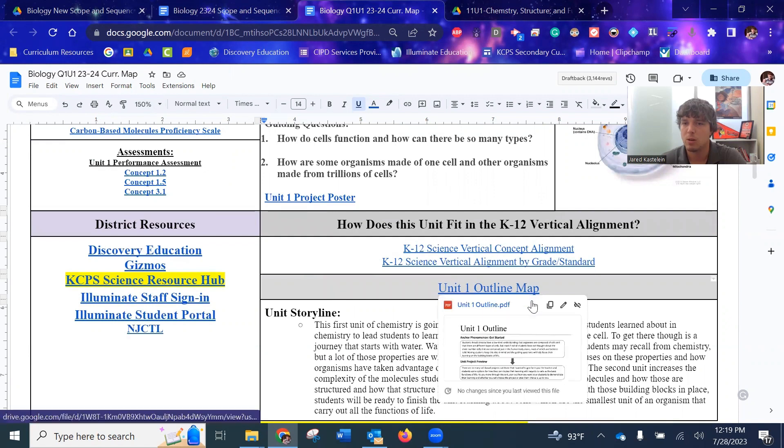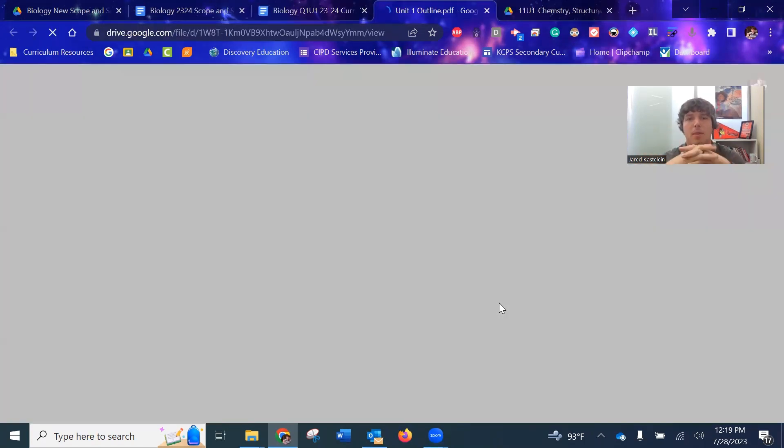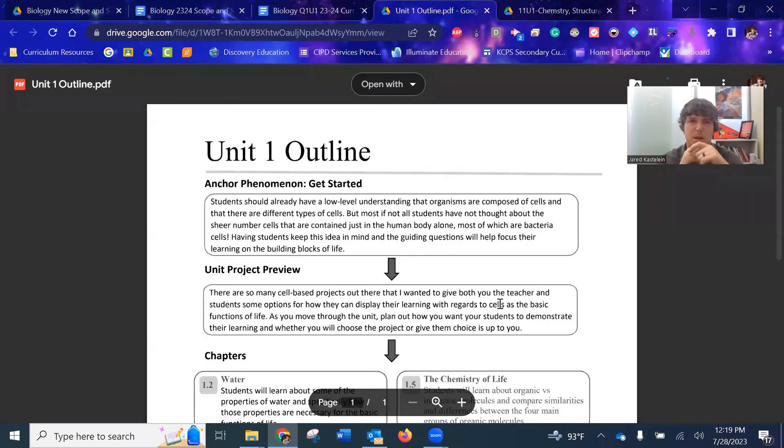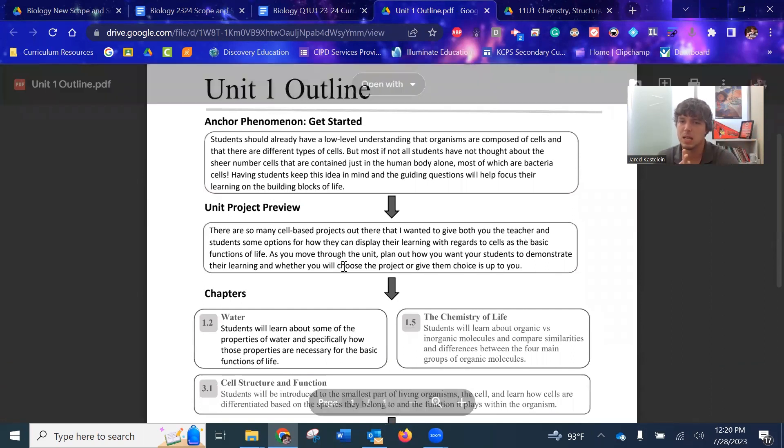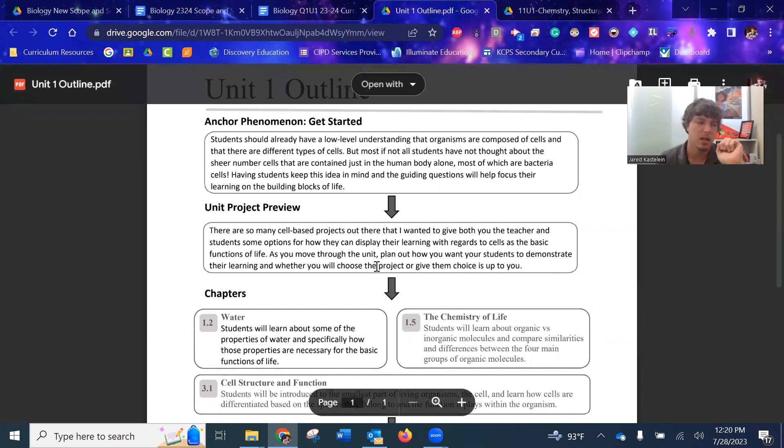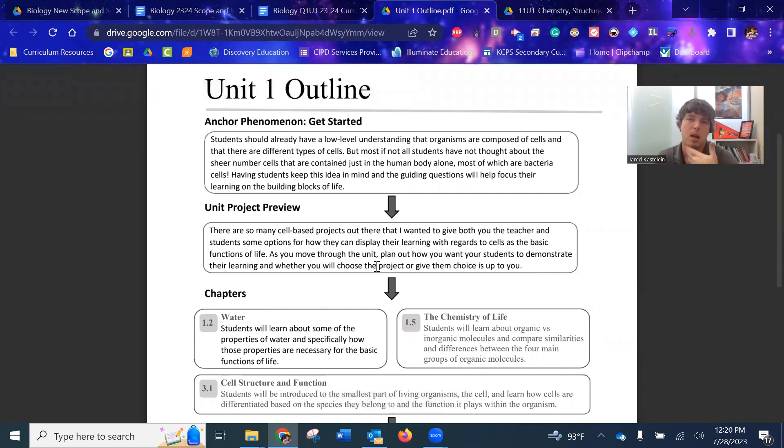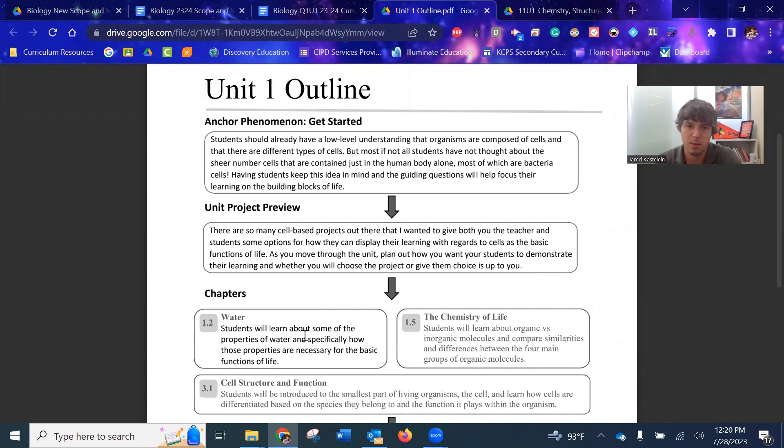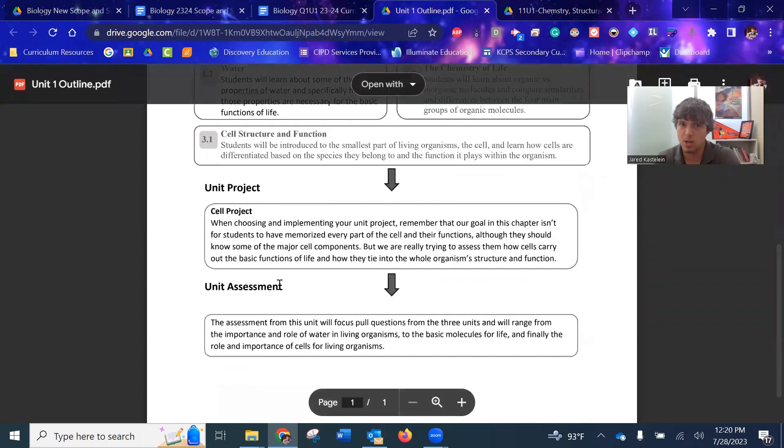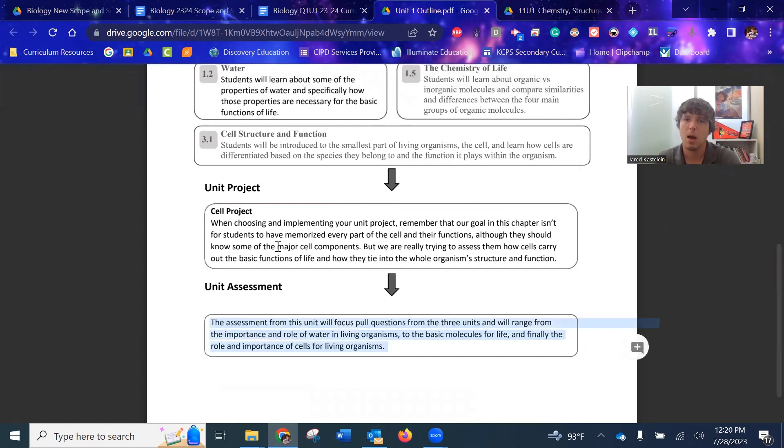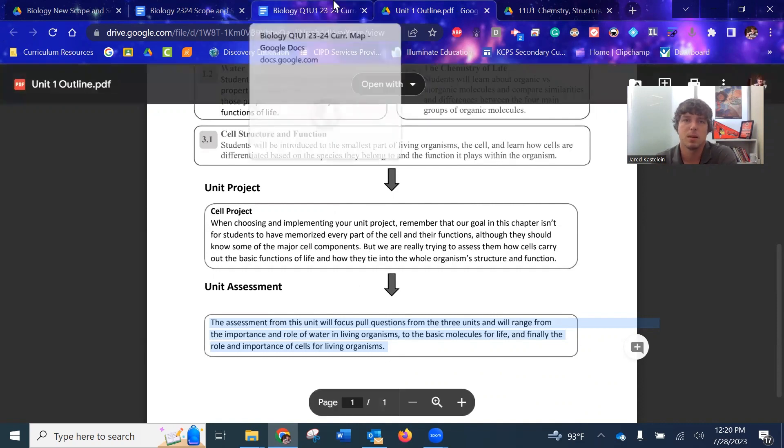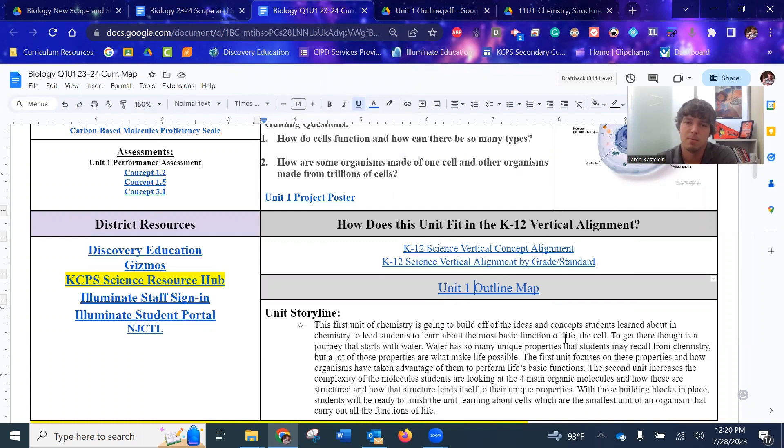Similar to that project poster, I have a unit outline map. This is kind of like a teacher facing version that just helps. Here's my flow as I move throughout the unit. You start with your phenomenon. You may want to preview what the project is with your students so they keep in mind what they're working towards. So that way, when you get to the end, they're not surprised by some project. You can introduce the idea at the beginning, maybe some reminders. And then when you get down to the project at the end, they already knew that it was coming up. Your three chapters, you're going to end with your project and then your unit assessment. I think I mentioned this in the previous video. I've only created unit assessments for the end of the quarters, which covers multiple units sometimes. So if you want to create individual unit assessments, that's something that we can co-work together to build something as a team.